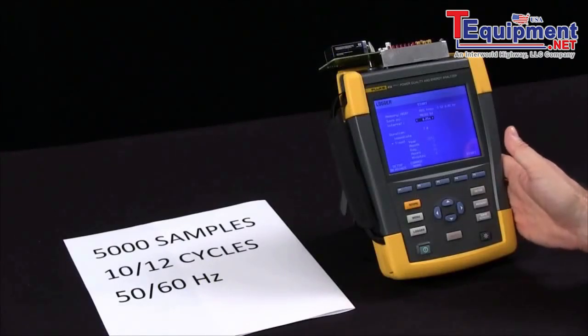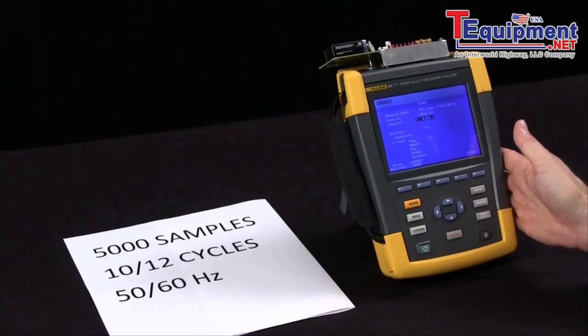And this explains one of the simple differences for the 435 series 2 power quality analyzer.